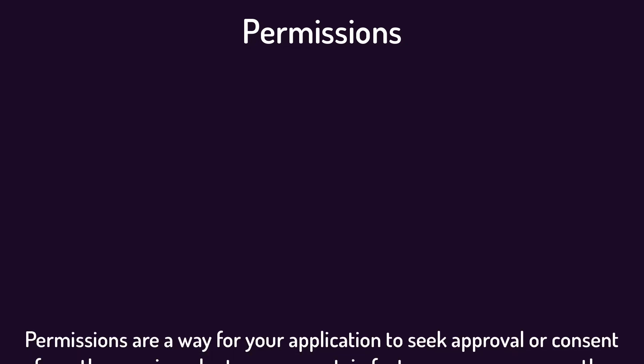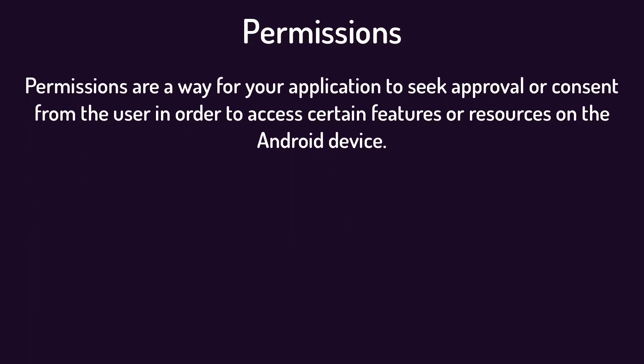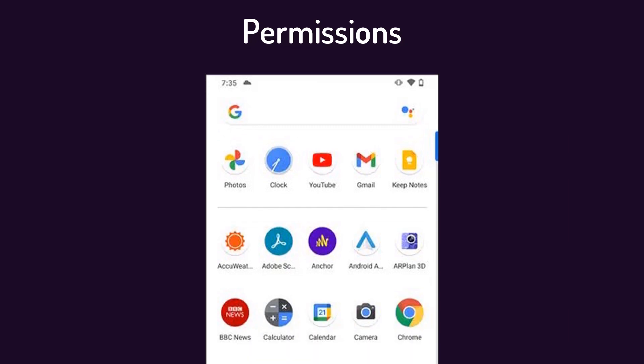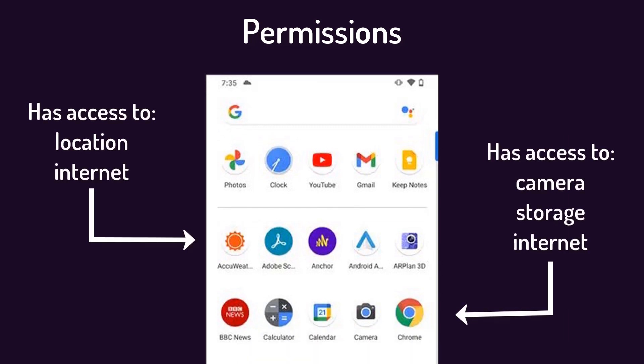Hey guys, welcome back to a new video. In this video we're going to learn about permissions in Android. Permissions are an agreement or a consent that your application requests from the user to access some features or resources within the Android device. They are important because they restrict or limit the accessibility of an application to features or resources of the Android operating system, to prevent malicious or false use of user privacy or device functionality.